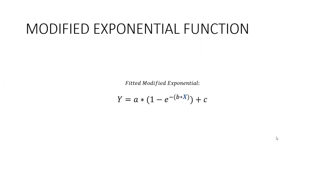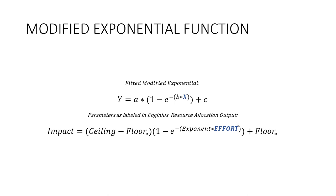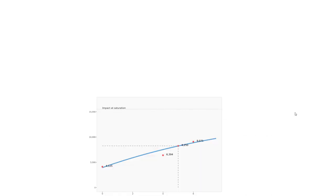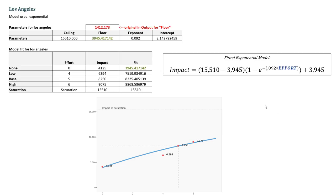The last type of model is the modified exponential function. It has three parameters: A, B, and C. In InGenius, A is ceiling minus floor, C is represented by floor, and B is the exponent. The shape of the exponential curve is a little different from the previous two. Using the same Los Angeles input and output data, the fitted results differ because the exponential model takes on a slightly different shape, though it still fits close to the data with some error.